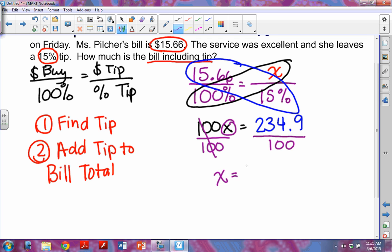Now I am left with just X on this side is equal to 234.9 divided by 100 gives me 2.349. Now since we're dealing with money that means we need to round. Money is always two decimal spots, so I'm going to look to the right of that 4. If it's bigger than 5 I'm going to round up. 9 is definitely bigger than 5, so that means that I'm going to be paying $2.35 in tip.